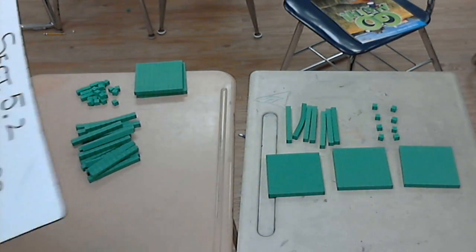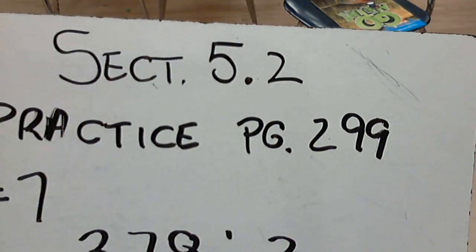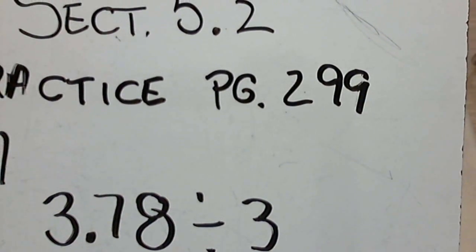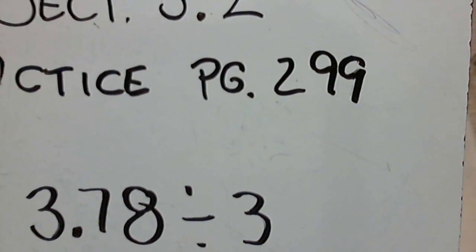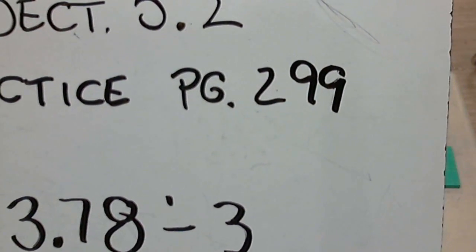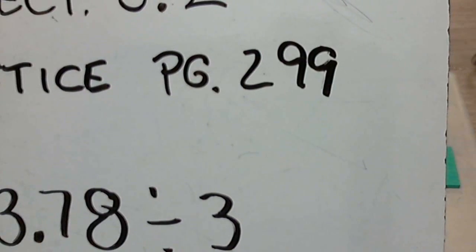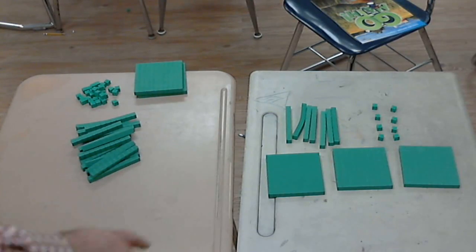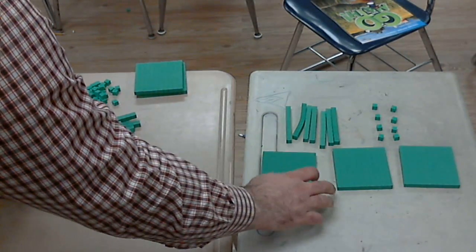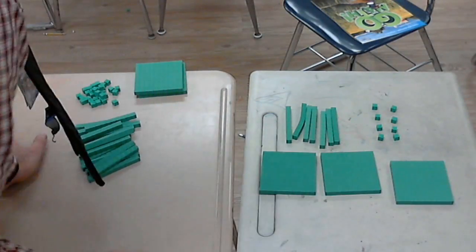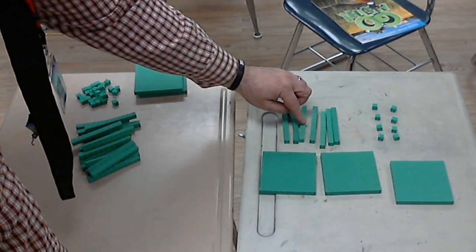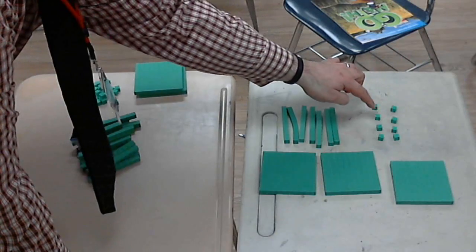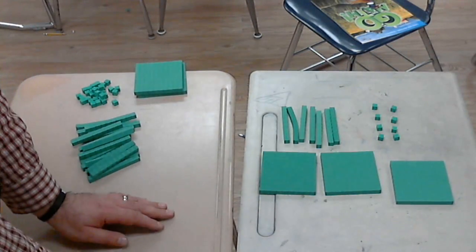Moving on to number seven, which is a little bit bigger: 3.78 divided by three — three and seventy-eight hundredths. We're going to use the little ones too in this one. Over here we have one whole, two wholes, three wholes, one through seven tenths, and then eight hundredths — these little guys — so that's 3.78.